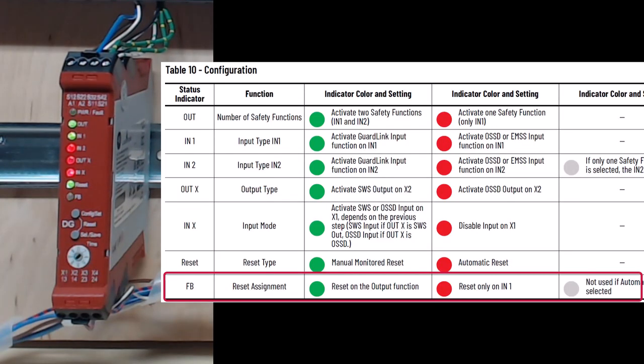The FB feedback LED is flashing green. This indicates that you want the reset to operate on the output function. You could have selected the reset to function only on in one by changing the LED color to red. Short press the select button to retain the current setting.